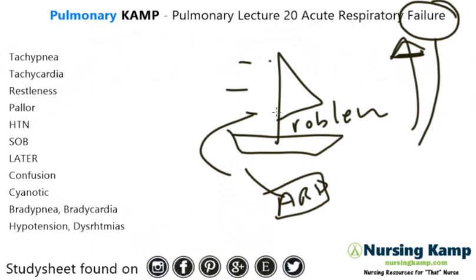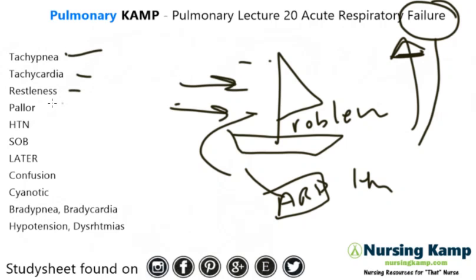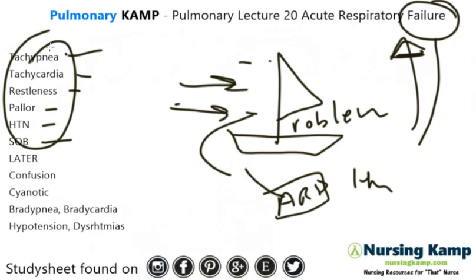As presented in a previous lecture where I talked about hypoxemia, the patient generally with the boat coming shows problems you start to see like tachypnea, tachycardia, restlessness, pallor, hypertension, and shortness of breath. These are all earlier signs — those signs are the boat coming.